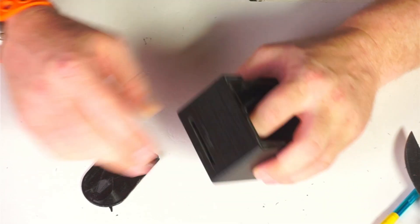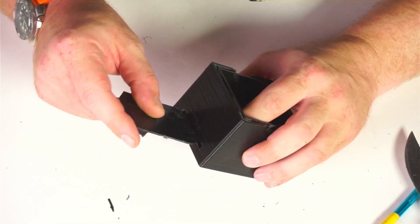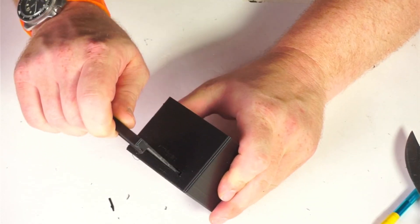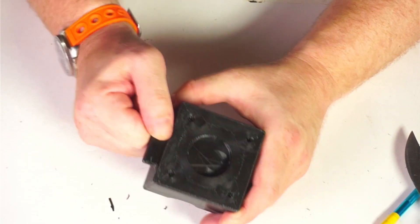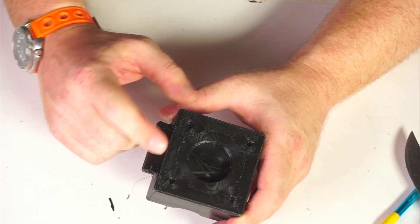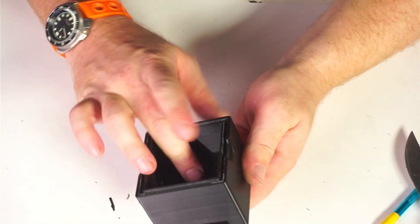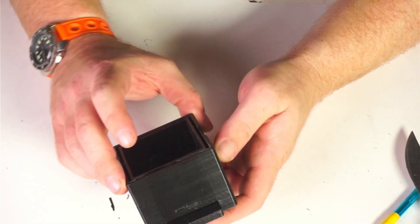We'll screw that in later. But first, we want to make sure that the dark slide will still fit in. Now that's in that pocket. So when that dark slide's shut, the film chamber is dark.